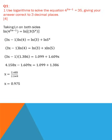The power 3x minus 1 should be at the start, then ln of 4, and on the right side we use the product rule for logarithm. Product rule means the product inside ln can be written as ln of 3 plus ln of 5 to the power x. In this way, we simplify this question and find the answer x is equal to 0.975.